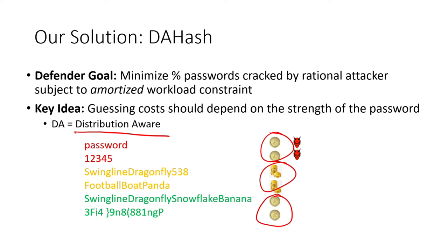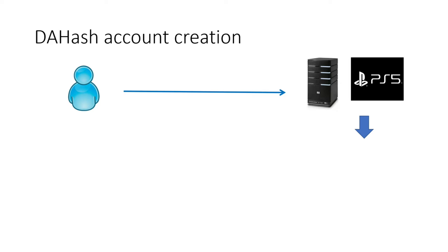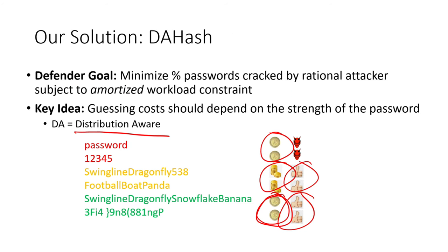In this setup, an attacker will almost certainly check all the weak passwords — and since those were going to be cracked anyway, there's little loss. But by setting the hash cost high for moderate strength passwords, the attacker will not crack them. And even though the hash cost is low for the strong password group, the attacker won't crack them simply because those passwords are too strong.